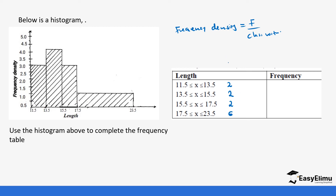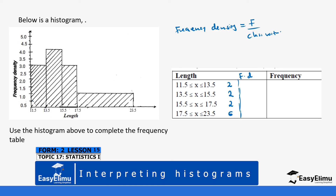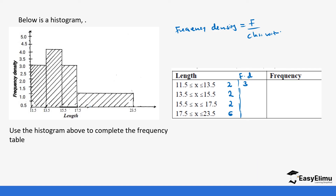We'll use FD to represent the frequency density values read from the graph. The frequency density for the class interval 11.5 to 13.5 is 3. For 13.5 to 15.5, extrapolating from the graph, it is approximately 4.25 — halfway between 4.0 and 4.5. For 15.5 to 17.5 it is 3, and finally for 17.5 to 23.5 it is 1.